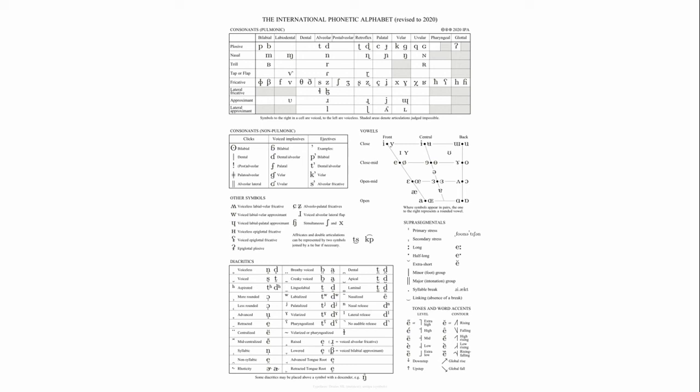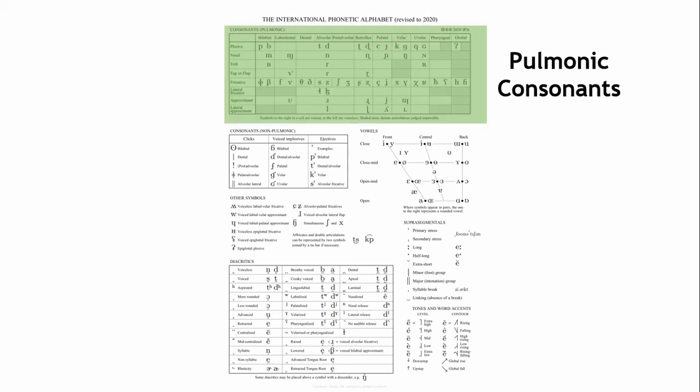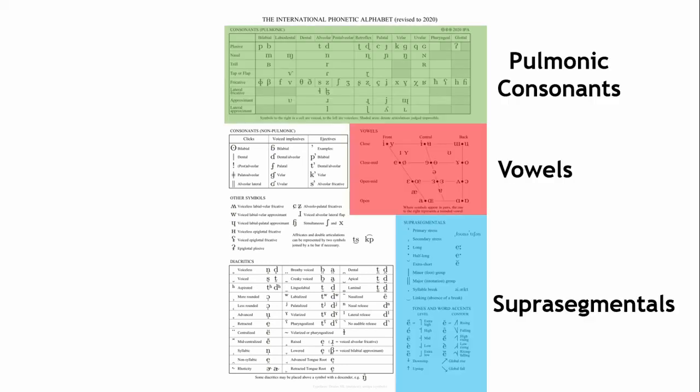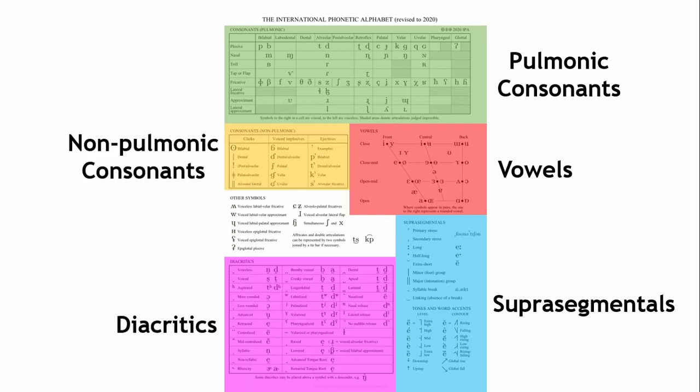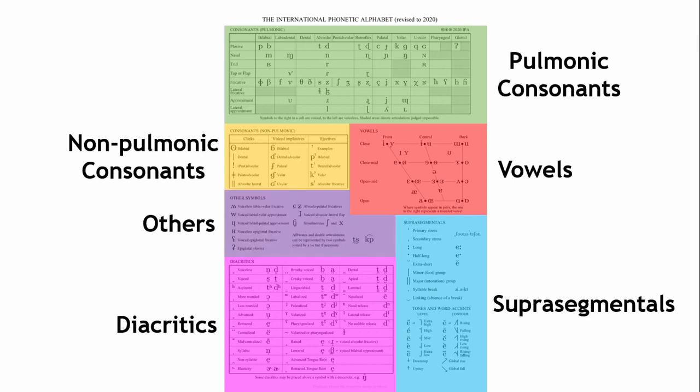You can think of it kind of like the periodic table of linguistics. It's composed of consonants, vowels, suprasegmentals, non-pulmonic consonants, diacritics, and other symbols. To recap, suprasegmentals are units of prosody, and non-pulmonic consonants are consonants which do not rely on the lungs to produce airflow.